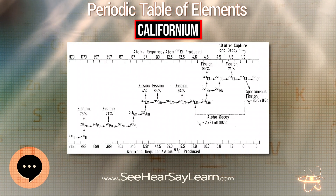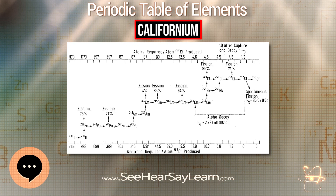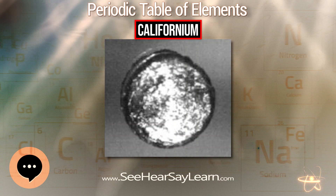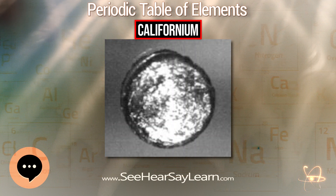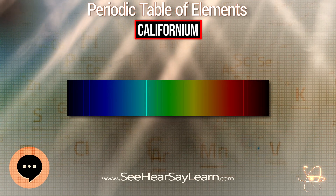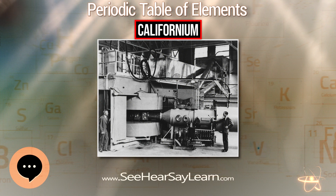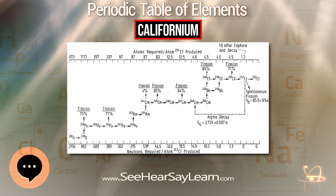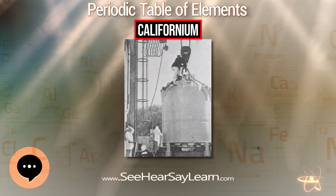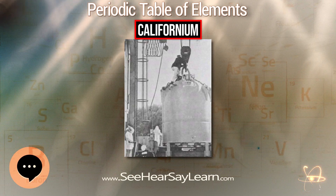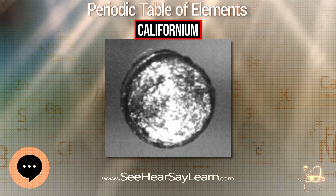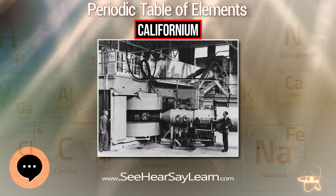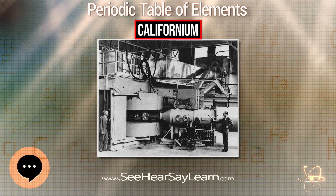Californium isotopes with mass numbers 249, 252, 253, and 254 have been observed in radioactive dust collected from the air after a nuclear explosion. Californium is not a major radionuclide at US Department of Energy legacy sites since it was not produced in large quantities. Californium was once believed to be produced in supernovae, as their decay matched the 60-day half-life of californium-254, but subsequent studies failed to demonstrate any californium spectra; supernova light curves are now thought to follow the decay of nickel-56.